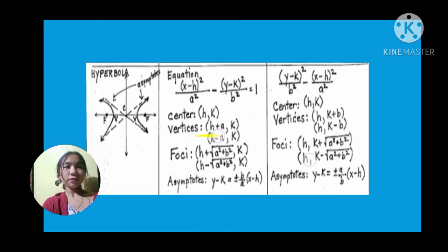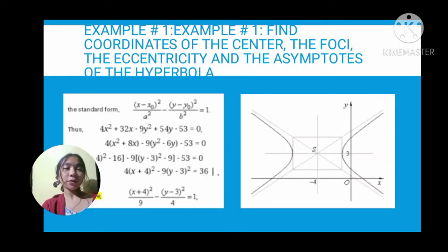For you to understand more, we have some examples here. Example number one: find the coordinates of the center, the foci, the eccentricity, and the asymptotes of the hyperbola. The standard form that will be used is shown here.